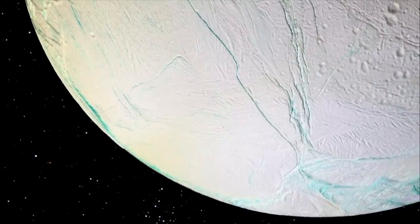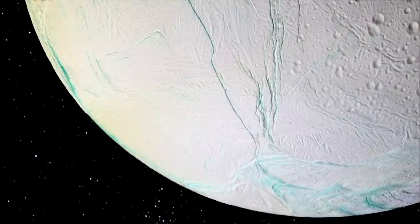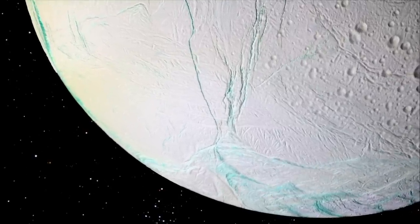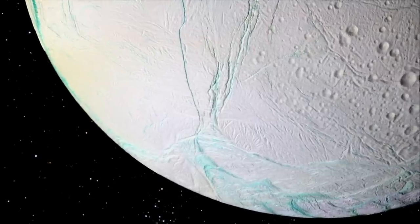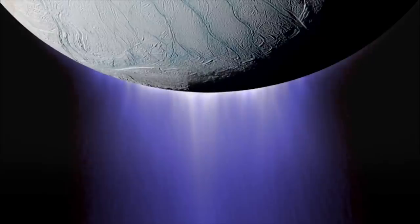Enceladus is only 500 kilometers across. Under ordinary circumstances, an object of this size should be too small to retain heat for billions of years. But Enceladus is nowhere near ordinary.